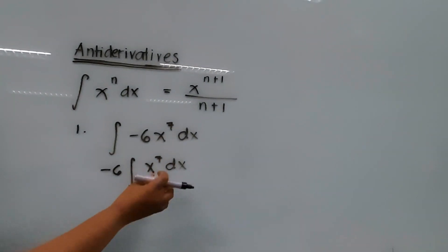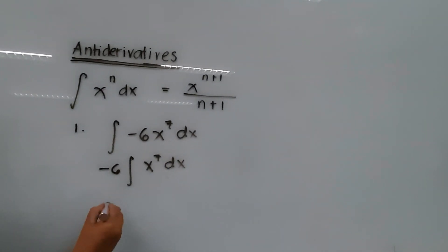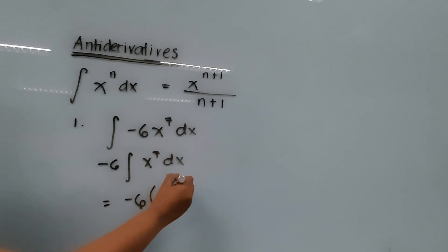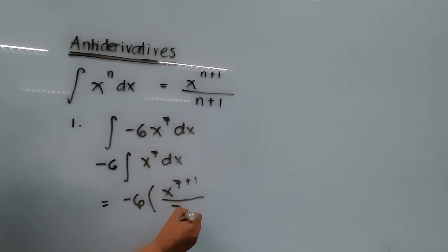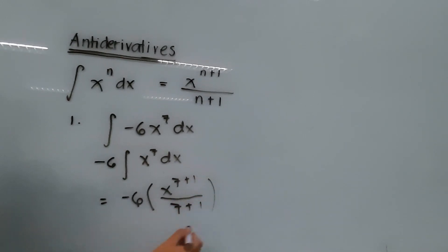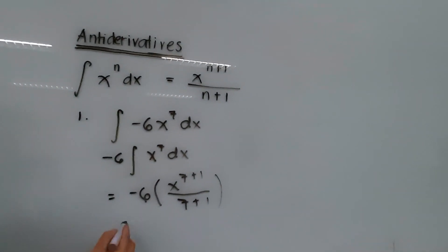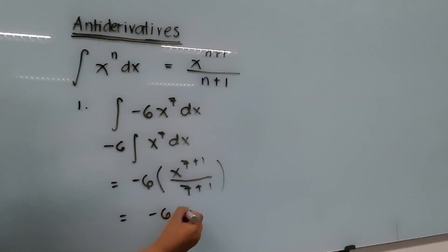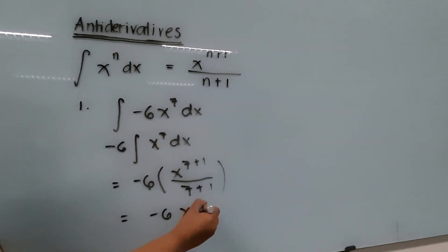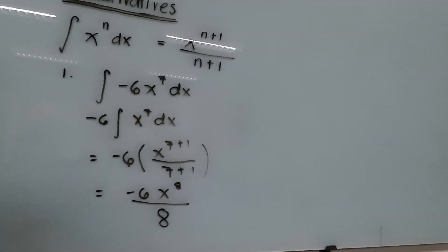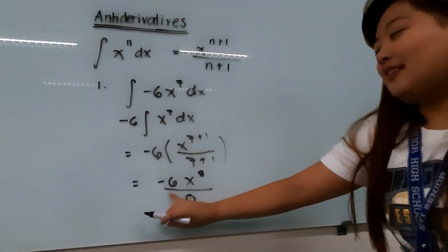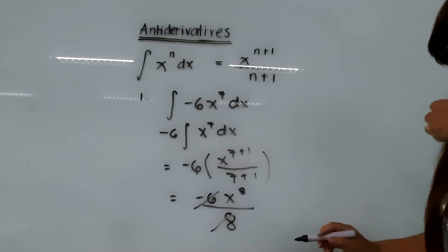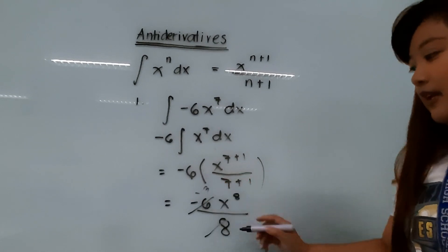Next, add 1 to the exponent. So we have negative 6 times the quantity x raised to 7 plus 1, divided by 7 plus 1. Then simplify: this will be negative 6x raised to 8 over 8. Both the coefficient and denominator can be divided by 2, giving us negative 3 over 4.